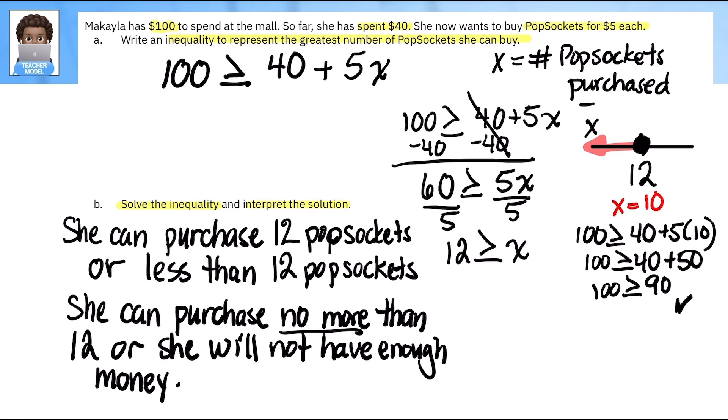No. Because right there, she would be spending too much money if she bought more than 12. If she bought 20, it would be 40 plus 20 times 5 is 100, and that would be $140. And that would be too much money. All right, hit pause and jot this down into your notes.